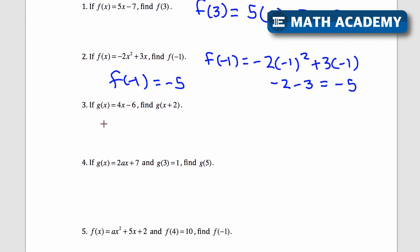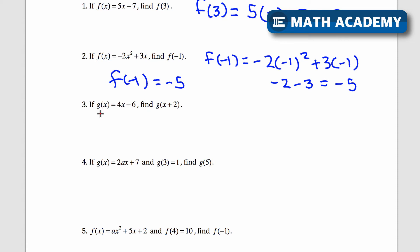Let's go down to this next one, number 3. If g of x equals 4x minus 6, find g of x plus 2. So the rule for this g of x function is we do 4 times the input and then subtract 6. Well, this time my input isn't just a number. It's the expression x plus 2. So I'm going to say g of x plus 2 would be equal to 4 times the input, which is x plus 2.